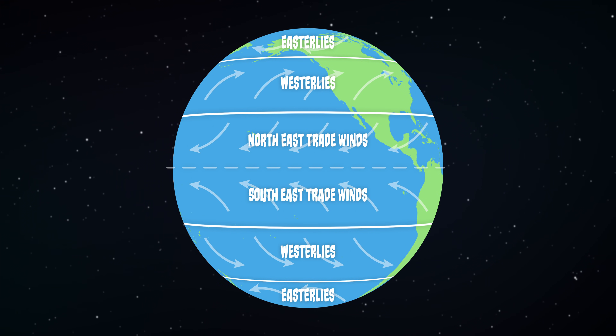This three-cell model accurately describes the main patterns of atmospheric circulation. However, the continents can break up the convection cells, affecting air movements and weather patterns. Besides these continental effects, there are also seasonal differences in the convection cells, meaning there are variations from our three-cell model depending on the time of year and the geography. That is how atmospheric circulation works. Stay tuned for part two to see how this affects the surface ocean currents. Leave any comments or questions down below, and I will see you later.